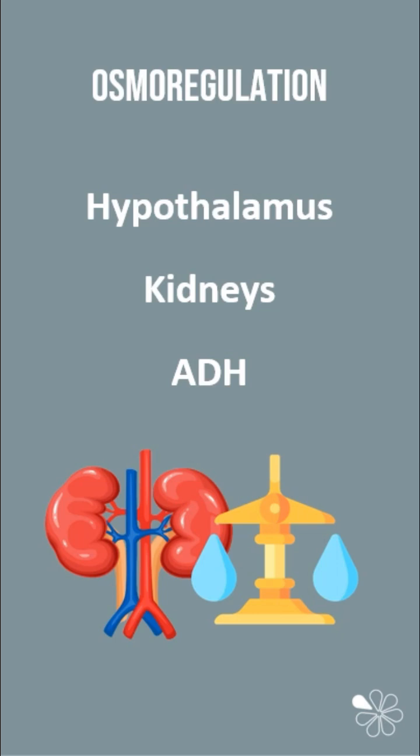This is achieved through mechanisms involving the hypothalamus, kidneys, and hormones like antidiuretic hormone, known as ADH. The hypothalamus detects if blood is too concentrated or too diluted and initiates the appropriate responses.